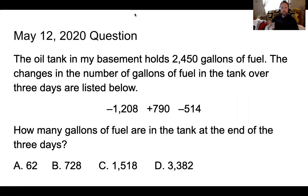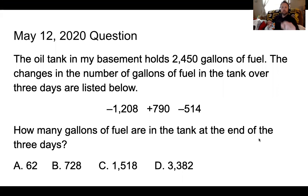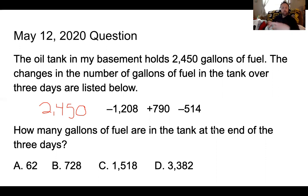Welcome back. We are looking at the equation for May 12th. We are told that our tank holds 2,450 gallons of fuel. The change in the number of gallons is shown over three days. I have a positive 2,450 gallons to start, and I'm given a negative 1,208, positive 790, and a negative 514.